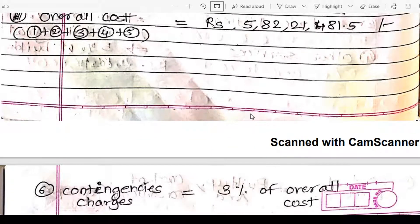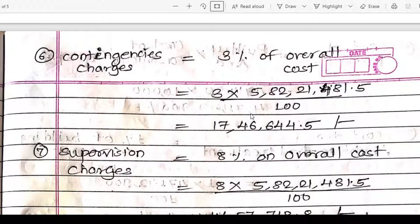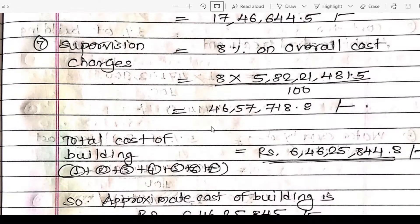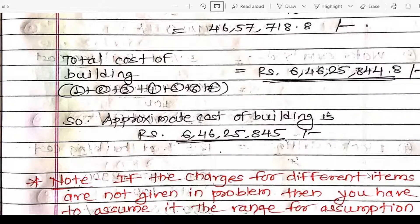Contingency charges of 3% and supervision charges of 8% are always applied on the overall cost of the building. Adding these to the overall cost, the total cost of the building is 6 crores 46,25,844.8 rupees, approximately 6 crores 46,25,845 rupees. This is the approximate cost of the building.